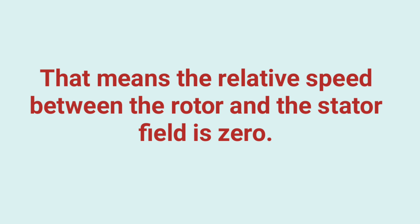Now in certain circumstances, this relative speed changes — sometimes in a negative or sometimes in a positive quantity. Then the rotor of the motor starts to oscillate, and this is referred to as hunting.